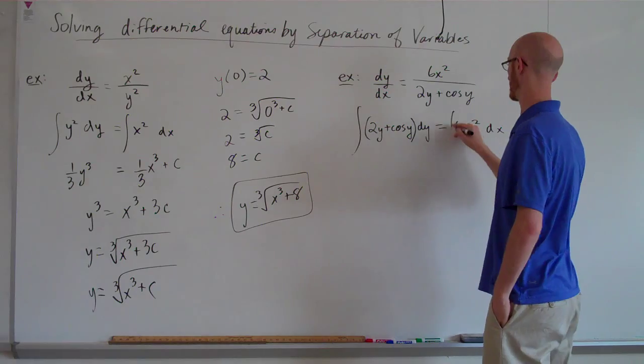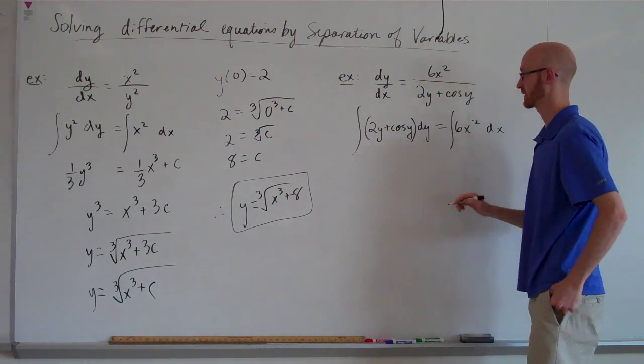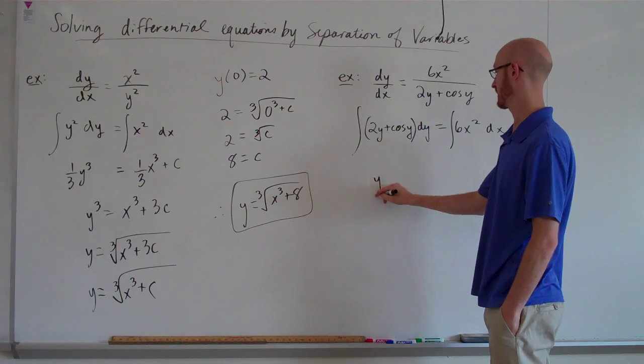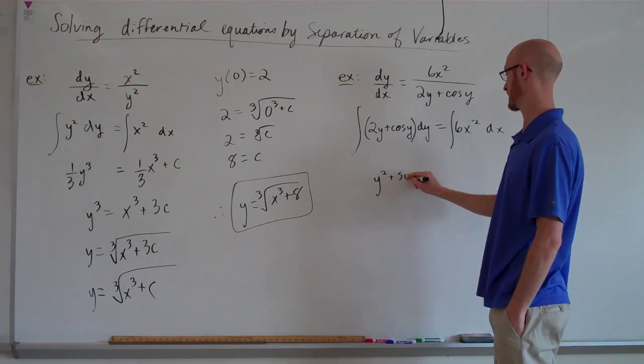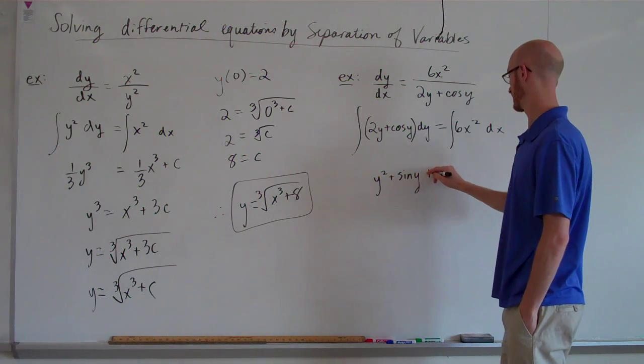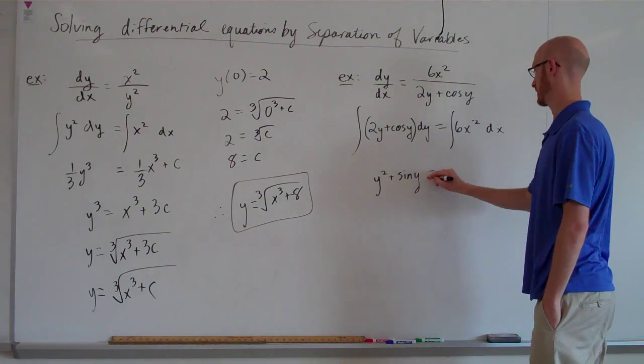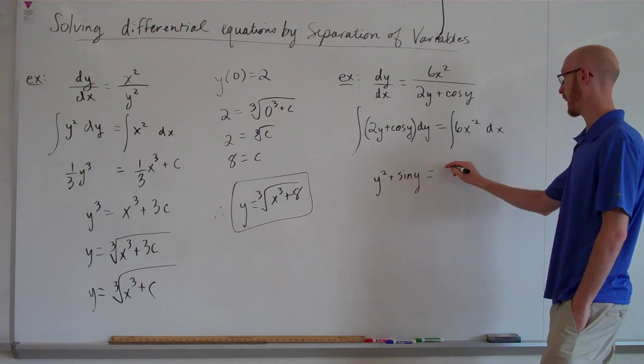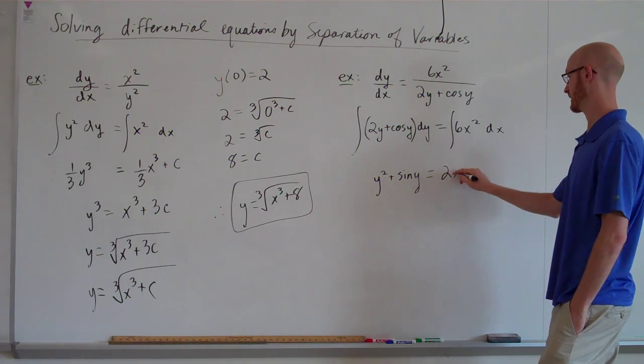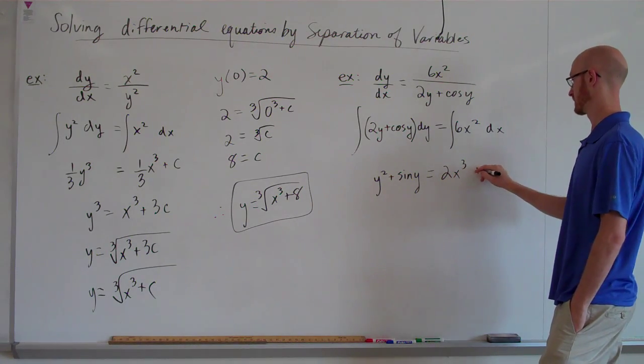We'll then integrate both sides. So we've already separated our variables. If we integrate that, we get y squared plus sine of y plus c. And I'm just going to leave the plus c off until the end of the right side. And here we'll get 2x cubed plus c.